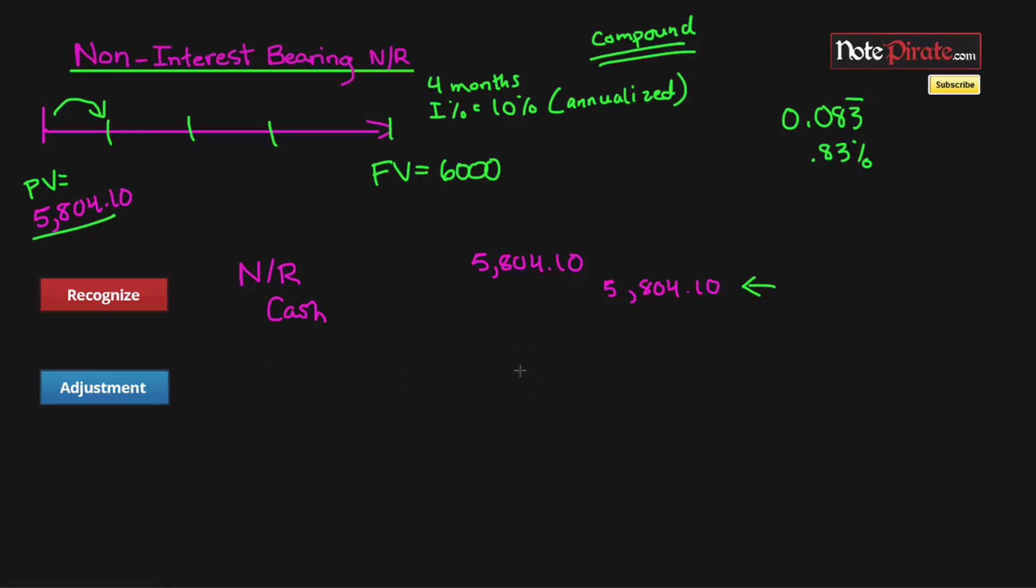So we're just going to take that 0.83% and we're going to multiply it by the carrying value. And that's going to be $48.37. Now we know that the credit is going to be interest revenue. What about the debit? The debit can't be cash because we're not receiving interest in the form of cash. What we're doing is we're receiving interest, but it's being capitalized to the note. So we're just going to debit note receivable and that's going to increase the carrying value. The carrying value at the end of the first month will be $5,852.47. And then for the next month to find the interest, we'll multiply this by the rate.